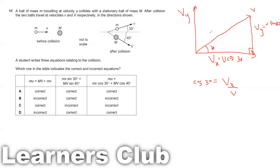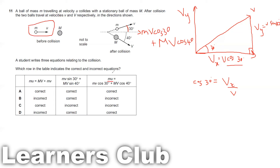If the angle is along the side of the vector, we get the vector times cos 30. If the side is away from the angle, we get the vector times sin 30. To resolve in the horizontal direction, the horizontal momentum component is MV cos 30 plus MV cos 40. So the full horizontal momentum equation is: MU equals MV cos 30 plus MV cos 40. This is correct.